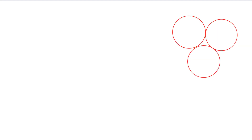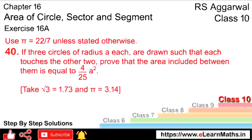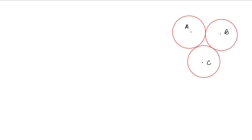Let's see — these are our three circles with centers A, B, and C. We are saying that each circle has radius a. This radius is a, and all three radii are a. So every radius here is a.